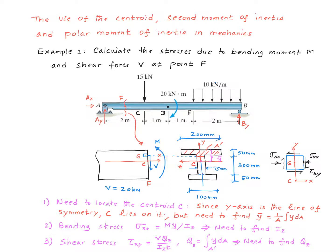Let's say we take a little differential element at a point on this cross-section where we are interested in calculating the stresses. The stresses on this differential element due to the bending moment and shear force would look like this. Sigma_xx is a normal stress, and in this particular example it's a compressive stress caused by the bending moment M. It is given by the flexure formula: sigma_xx equals M times y over Iz, where y is measured from the neutral axis Z placed at the centroid C. So to utilize this formula, the first step is to find the centroid, and Iz is the second moment of inertia of this cross-section about the z-axis.